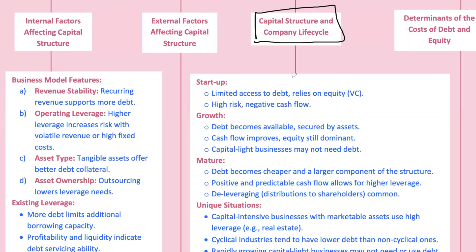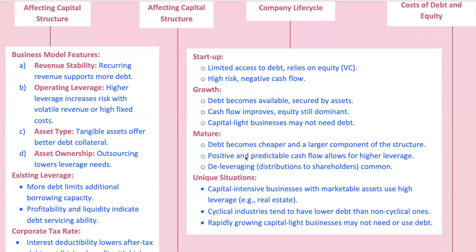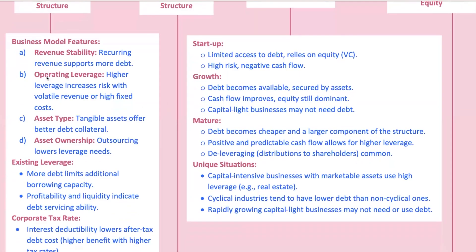Company life cycle stage plays a massive role as well. Startups often can't afford much debt because they don't have the steady cash flow to service it. Mature companies can use more debt because they have stable revenues and strong market positions. Consider Tesla in its early days — it was heavily reliant on equity financing because its cash flows were uncertain. As it matured and became profitable, it started to take on more debt to finance expansion, knowing it could handle the interest payments.